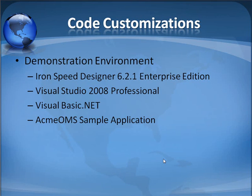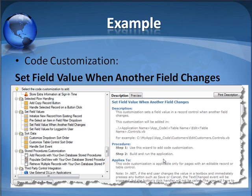For this demonstration, I am using Ironspeed Designer 6.2.1 Enterprise Edition and Visual Studio 2008 Professional with VisualBasic.net. I will be using the Acme OMS Sample application which you can download from the Ironspeed website. I will be using the code customization Set Field Value When Another Field Changes. This simple customization is available in all versions of Ironspeed Designer.